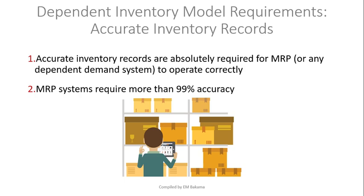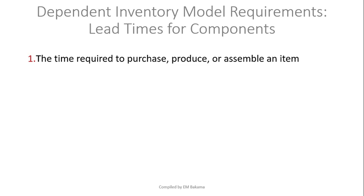Inventory accuracy is another key requirement for MRP. To plan materials effectively, you must know exactly how accurate your inventory records are. MRP systems require more than 99% accuracy in inventory records so you don't over-order or under-order. This is where accurate inventory management becomes critical to the overall MRP process.